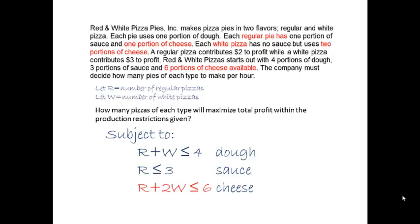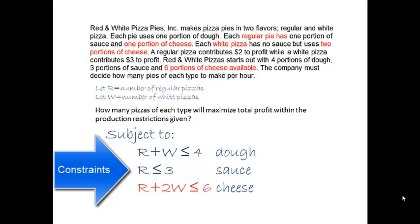Now cheese. Each regular pizza uses one portion of cheese, and each white pizza uses two portions of cheese. So the cheese used by all the pizzas will be 1R plus 2W. Since six portions is the limit of available cheese, R plus 2W, the cheese used, must be less than or equal to 6, the cheese available. These are the three constraint equations for the shared limited resources in this pizza problem.